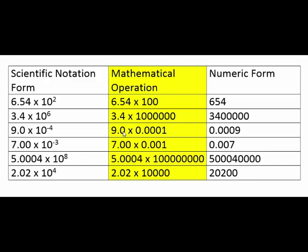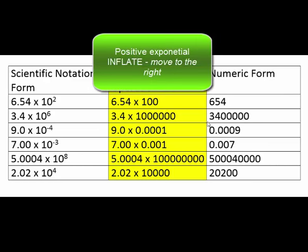The next example: 3.4 times 10 to the 6. Ten to the 6 is a million — it's a huge number. So effectively 3.4 times a million. If you were to move the decimal to the left, think about what a small number you'd generate, and that doesn't make magnitudinal sense when multiplying 3.4 by a million. Your outcome should be a big number because you're inflating 3.4 by a million.